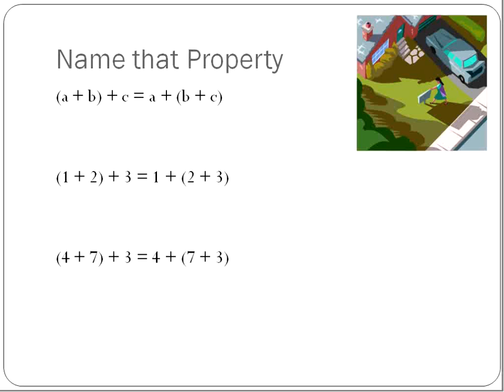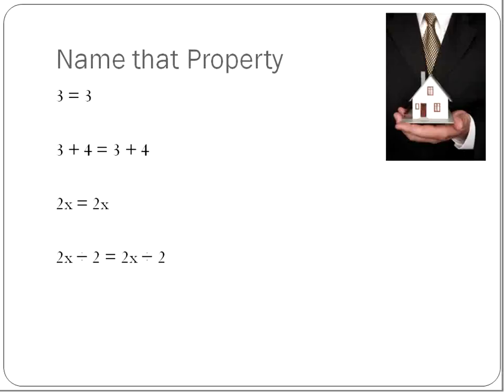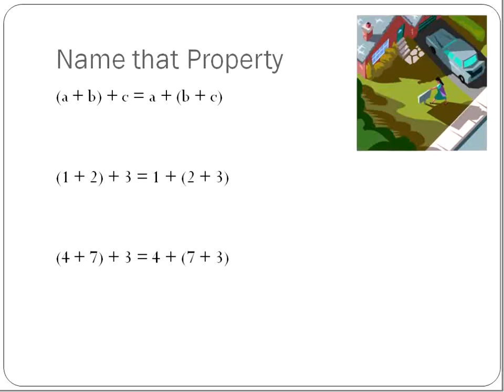All right, now we're going to play a game show: Name That Property. I've listed three different things here that all have exactly the same thing in common — they are the same property, although you've got different numbers in there. We're moving the parentheses in exactly the same way in every single one. What's the property when you associate two numbers together, leave them all in the same order, but two are associating together first? That's the associative property, because they are associating with each other.